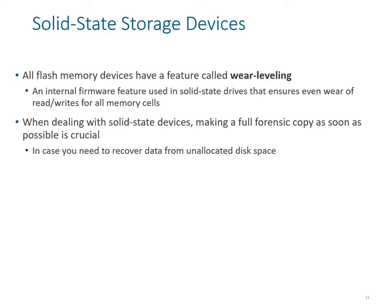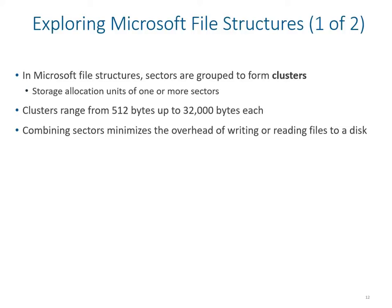Looking at Microsoft file structures: sectors are grouped into clusters, which are storage allocation units of one or more sectors where data is written on the hard drive. Clusters range from 512 bytes up to 32,000+ bytes per cluster. Combining sectors minimizes the overhead of reading and writing files. For NTFS, cluster numbering starts at zero, while for FAT it starts at two. The first sector contains the system area, boot record, and file structure database.